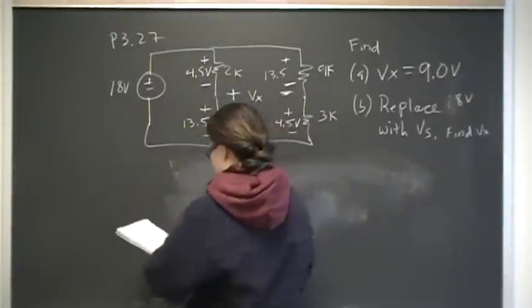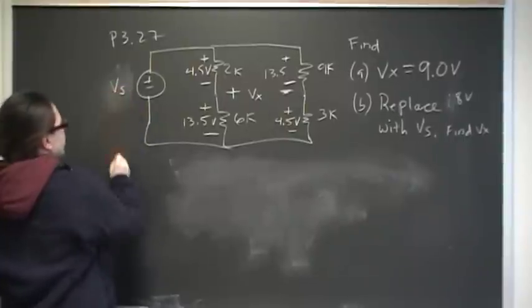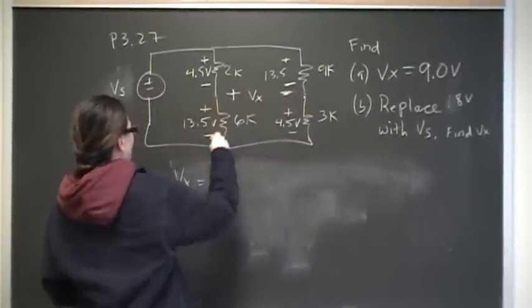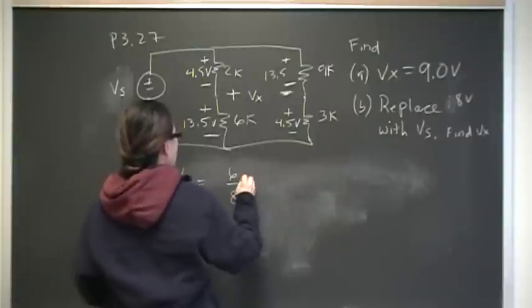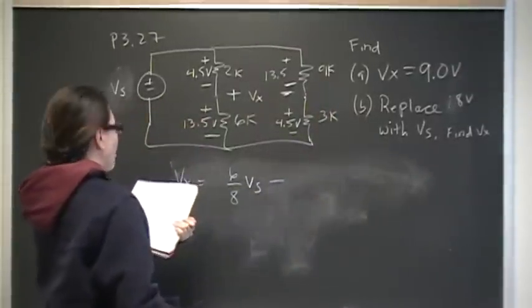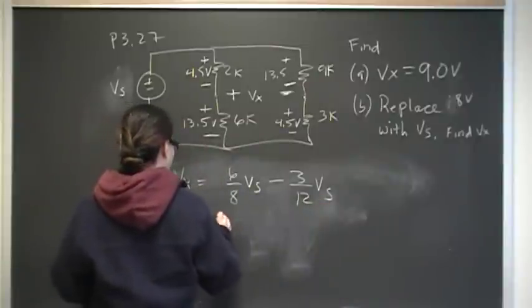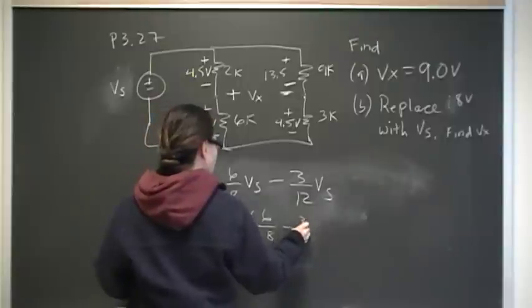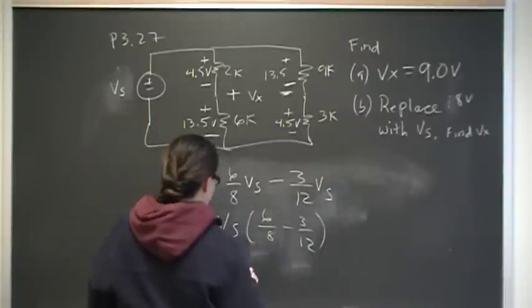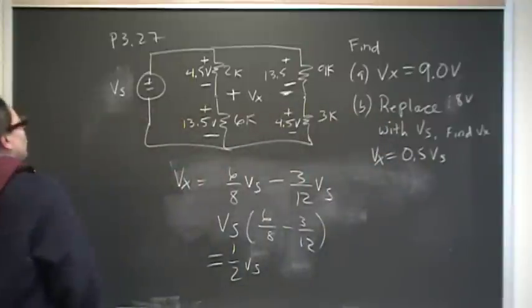Part B is basically, we're going to do the same thing, but I'm going to replace this with a generic V sub S. Okay, so just calculate it through. I'm going to work with this one going down because it's easier. So VX is going to be this voltage drop, which is going to be 6/8 minus 3/12 of Vs. Over here we have 3 over 9, which is 1/3, or 3/12, excuse me, 3/12 of Vs. So factor out the Vs. 6/8 minus 3/12, and that should give you 1/2. So this will be 1/2 Vs, so part B is going to be VX is 0.5 Vs. And that's the answer to part 2, number 3, 7.